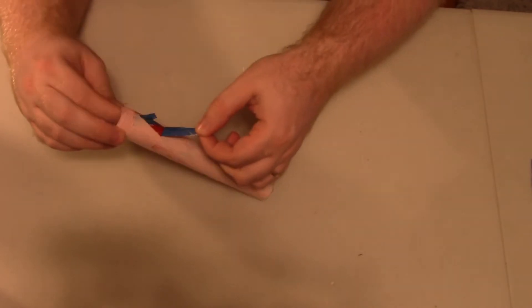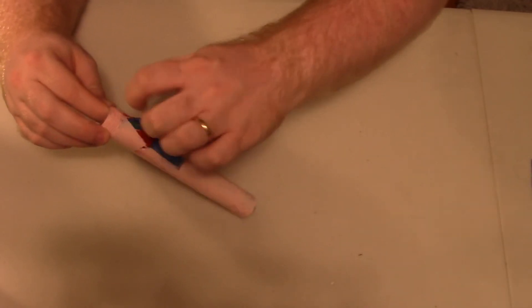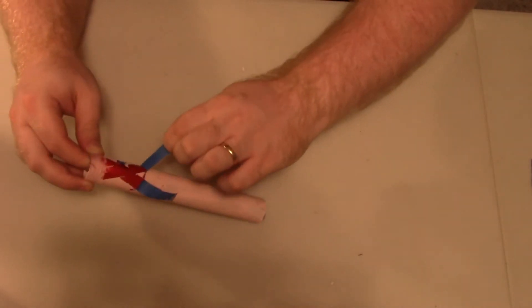Once your second coat is dry, carefully peel off the layers of tape to reveal the lines of color beneath.